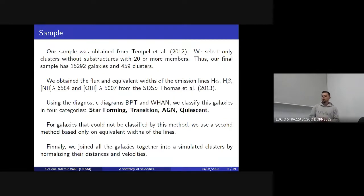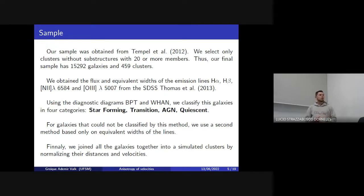Our sample was obtained from Tempel. We selected only clusters without substructures with 20 or more galaxies. We obtained the fluxes and equivalent width of the emission lines from the SDSS database. Using the diagnostic diagrams BPT and WHAN simultaneously, we classified the galaxies in four categories: star-forming, transition, AGN, and quiescents.